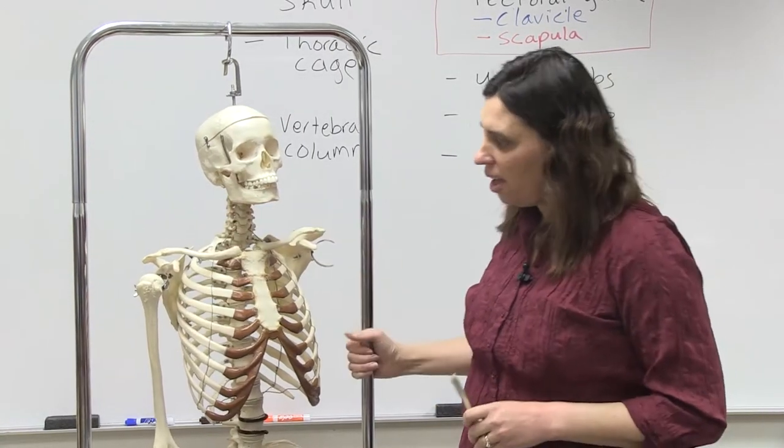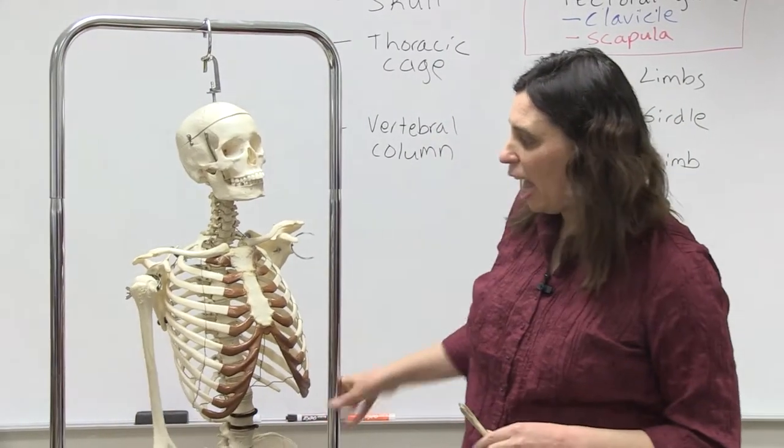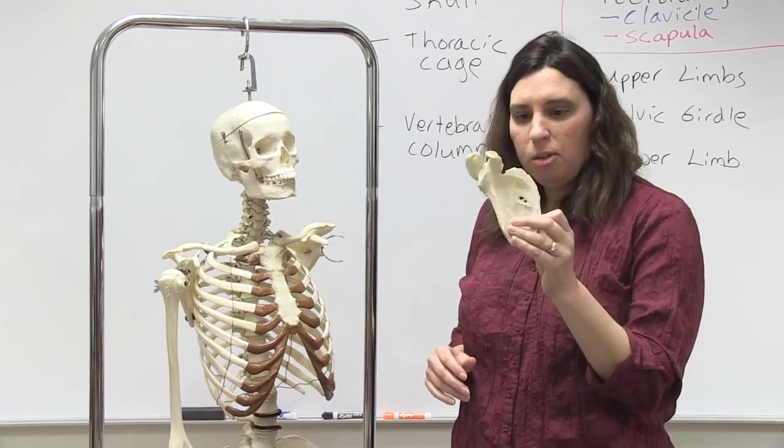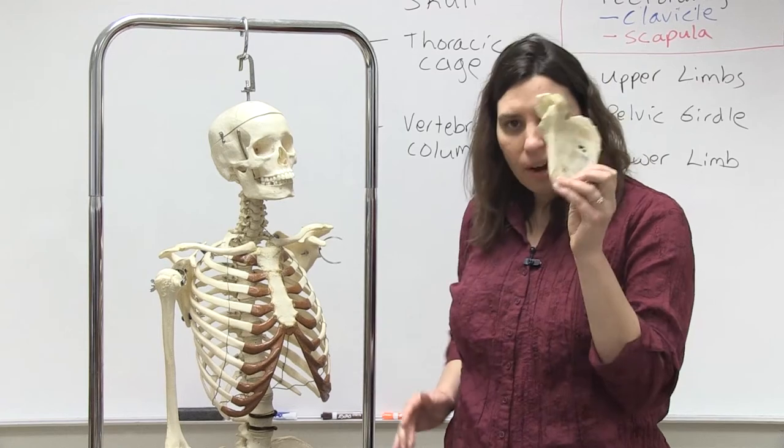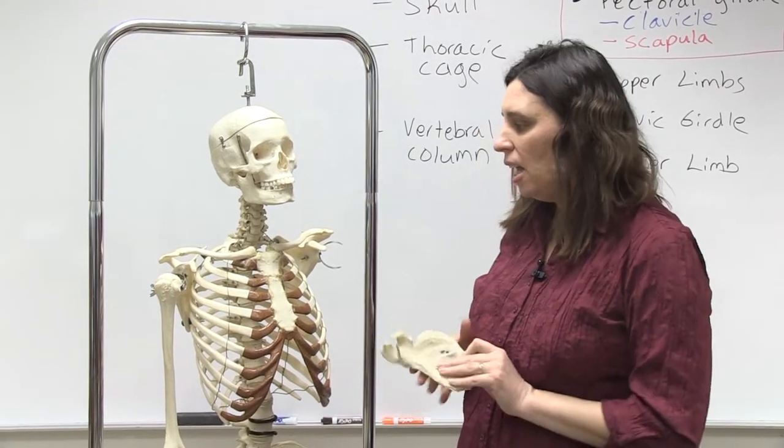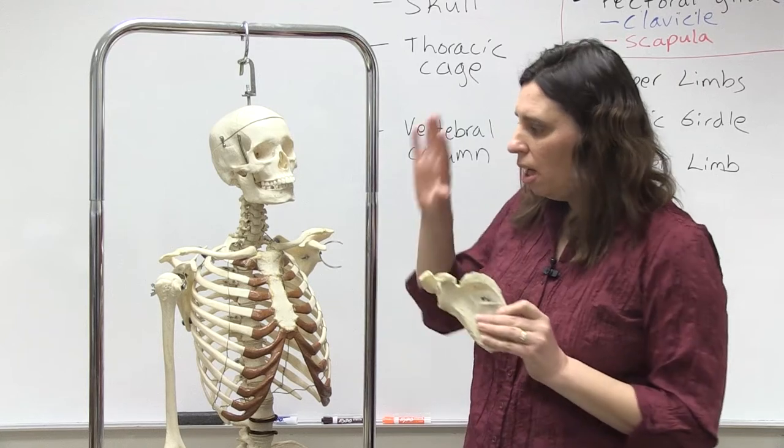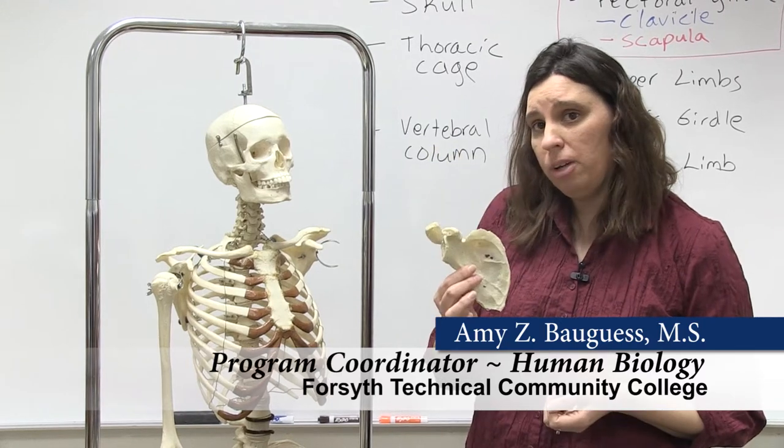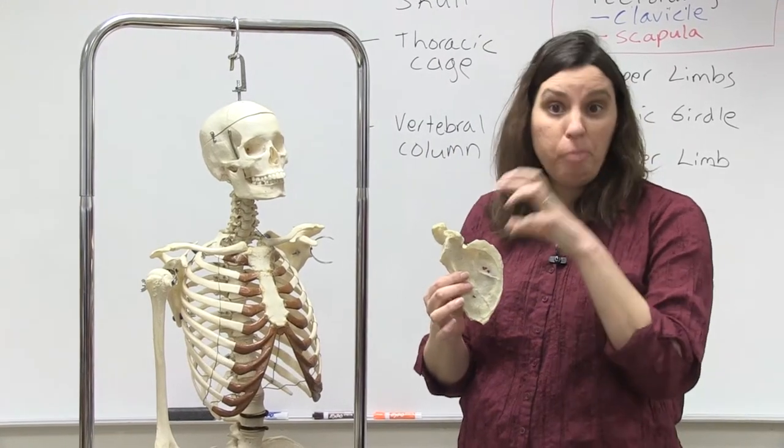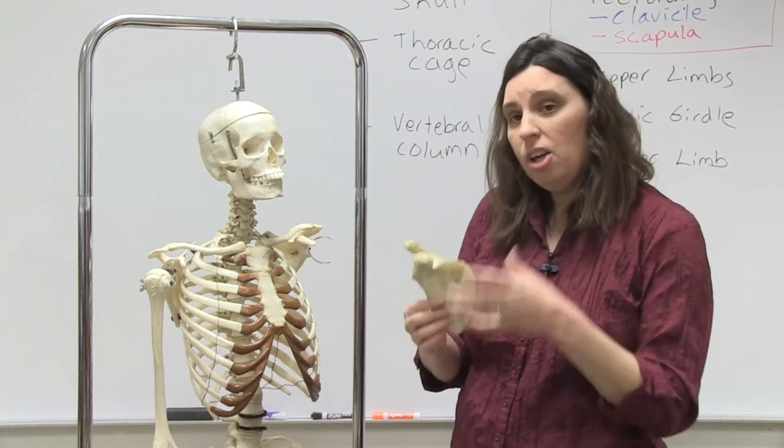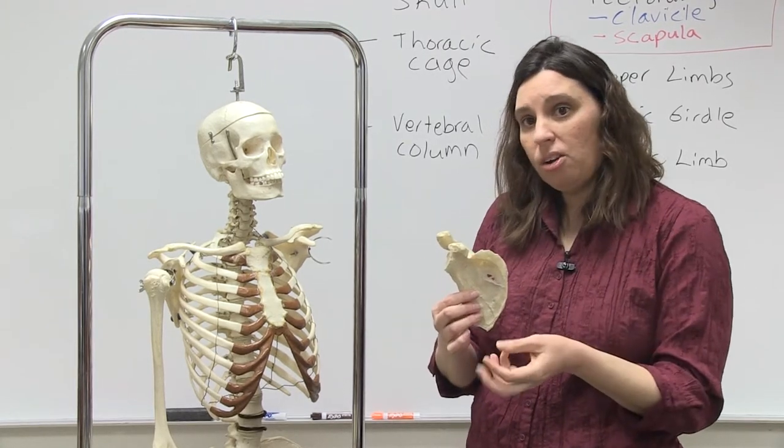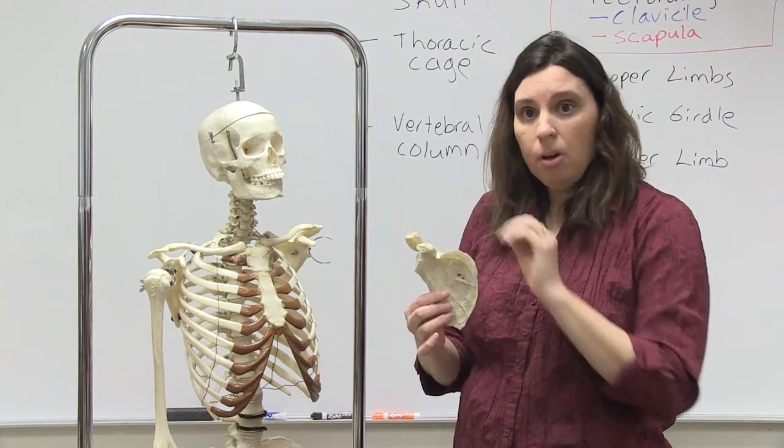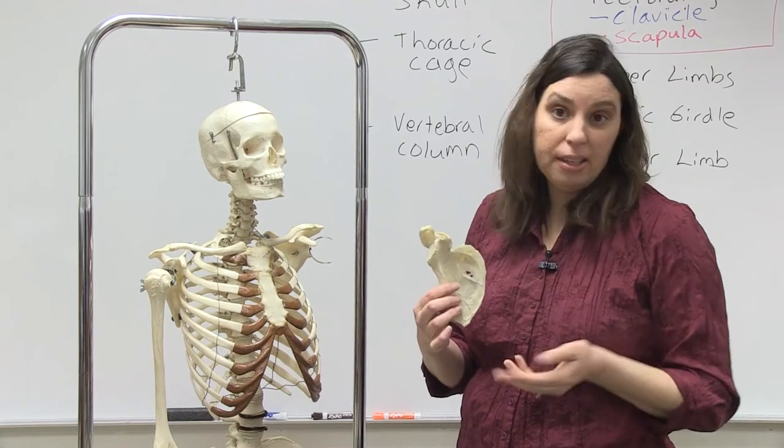So that's the clavicle. And the other major bone of the pectoral girdle is the scapula. And this one looks a little more interesting—it's got a lot of little depressions and processes on it. And once again, when you're trying to learn about bones, you need to identify not only the name of the bone, but also a specific bone markings on the bones.